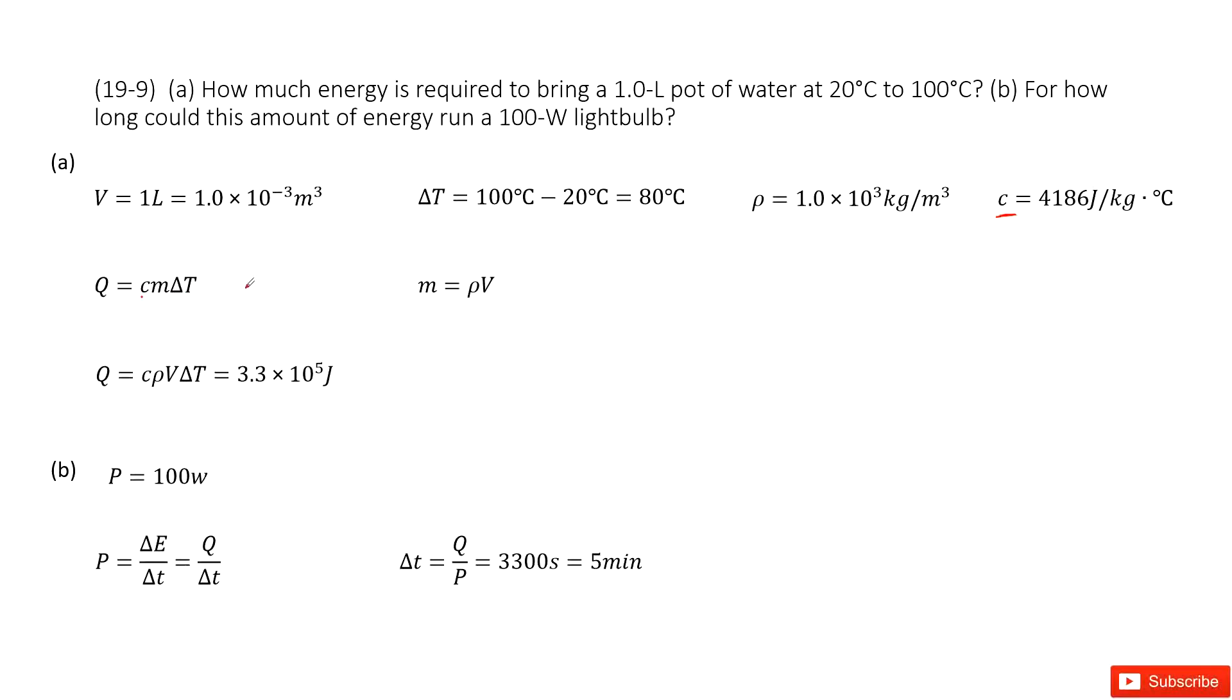Delta T is given. So in this case, we can see we input the m as ρV, the rho v. Now we get the function look like C rho v Delta T. Input all the quantity, we get the final answer there. Now next part.